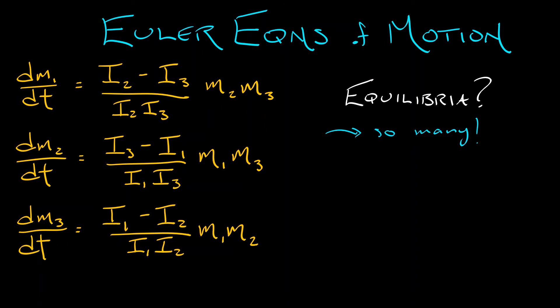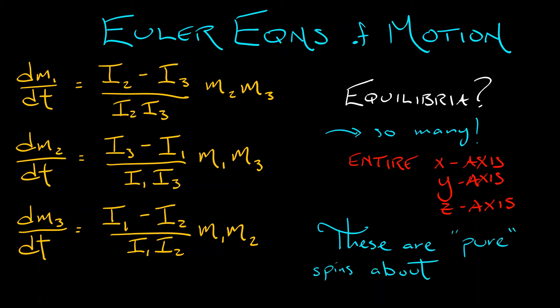You have equilibria along the entire x-axis, the entire y-axis, and the entire z-axis. Now, this isn't that weird. It kind of makes sense because these are the principal axes of rotation. If you start rotating about the x or the y or the z-axis, you remain rotating about that axis with that pure angular momentum just along one direction.